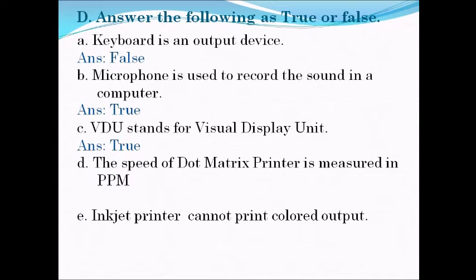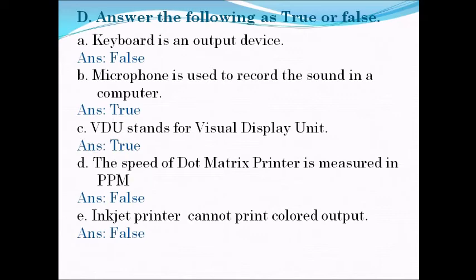Fourth: the speed of a dot matrix printer is measured in PPM — the answer is false, because the speed of a dot matrix printer is measured in CPS, meaning characters per second. Fifth: the inkjet printer cannot print color output — the answer is false, because the inkjet printer can print both color output and black ink output.